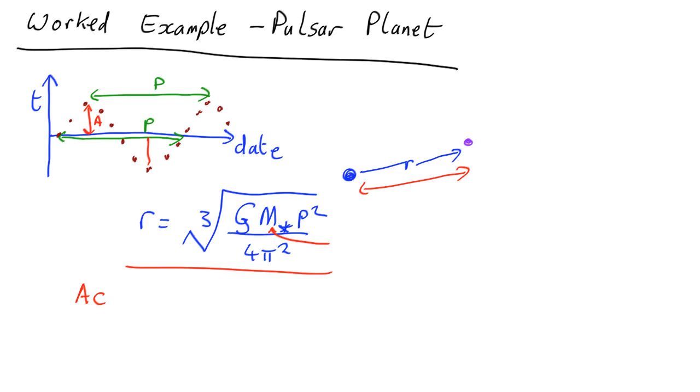So is that telling us by how far the pulsar is moving as it goes around and around in its reflex motion? Well, not really, because we don't know if the orbit is edge on. If the orbit is edge on, then that is indeed equal to the size of the reflex motion, which I'll call r_star, the orbital radius here.